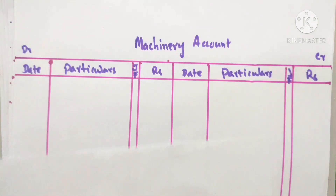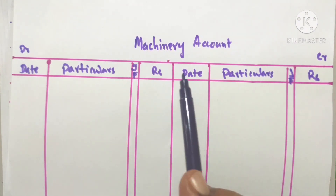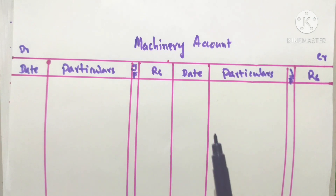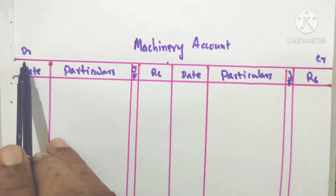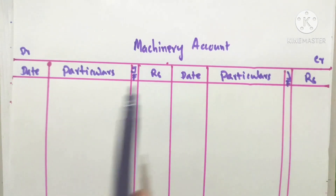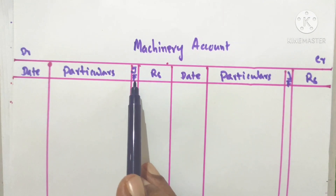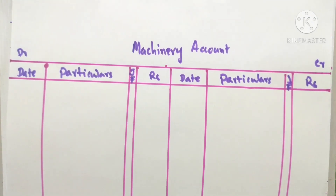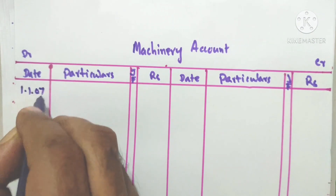Machinery account. We set up the ledger with debit side and credit side. Each side has columns for date, particulars, general folio, and rupees.